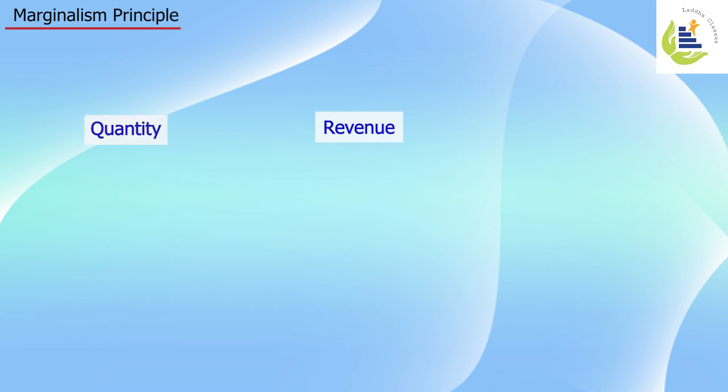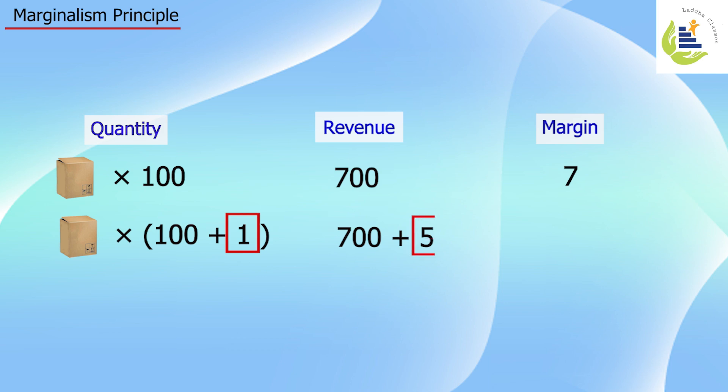How does it help? When I'm a manufacturer, I sold 100 units and got 700 rupees. When I go for the next additional unit - that 101st unit - my total collection is 705 rupees. With one extra sale, the change in revenue is five rupees, and that is the margin due to one product after 100 units.